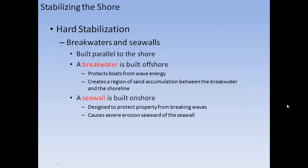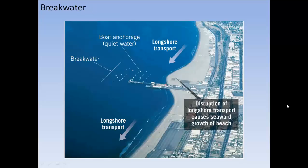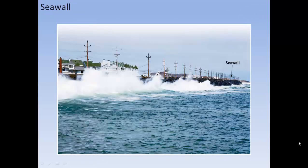Breakwaters are built parallel to and offshore from the shore to protect boats from wave energy, creating a region of sand accumulation between the breakwater and the shoreline. A seawall is built onshore to protect property from breaking waves, but causes severe erosion seaward of the wall. Here is a breakwater protecting boats from waves, and here is a seawall close to shore where waves break directly against it.